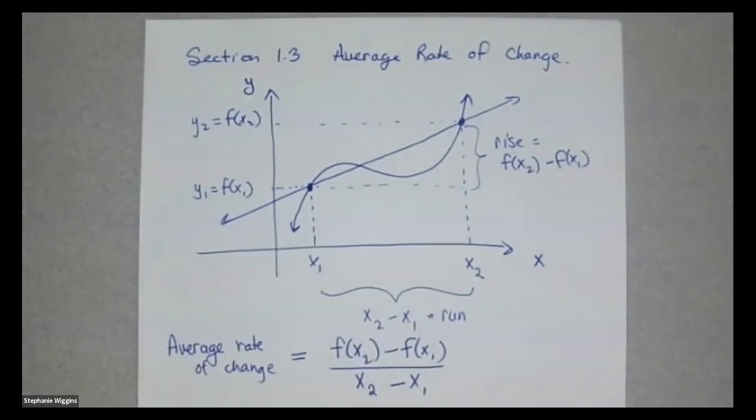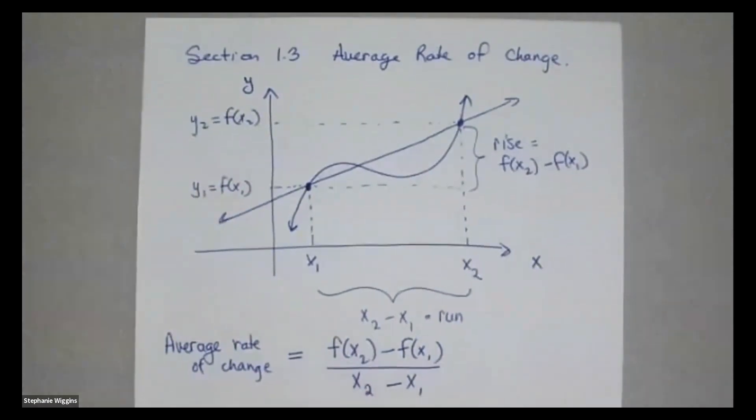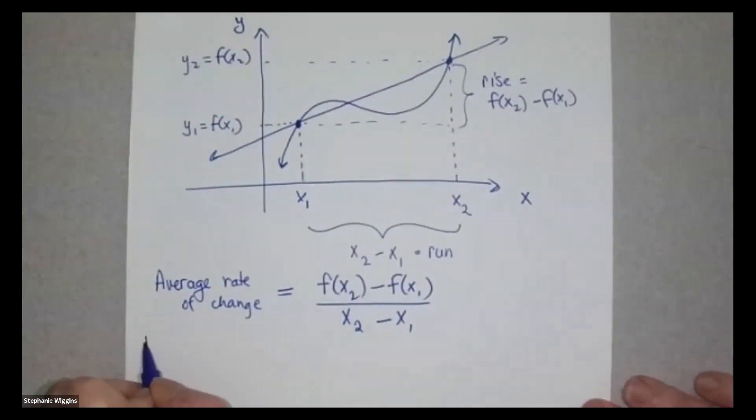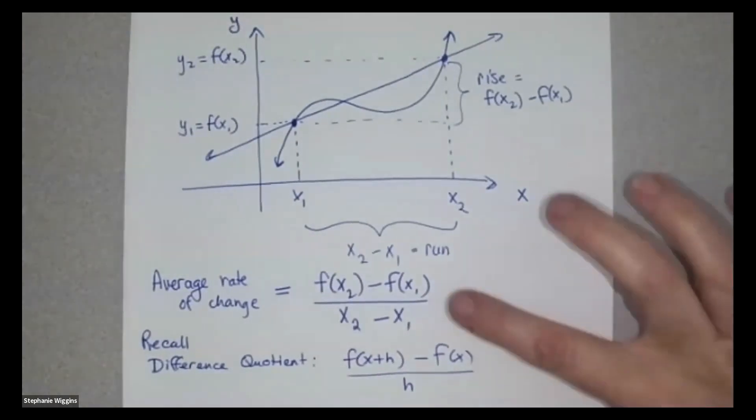Now you've seen something like this before. Obviously that's just how you calculate slope, but it's also the difference quotient. The difference quotient was in a little bit of a different form. Remember that was f of x plus h minus f of x over h. Well, how are these the same?